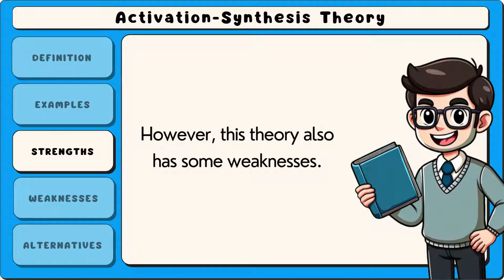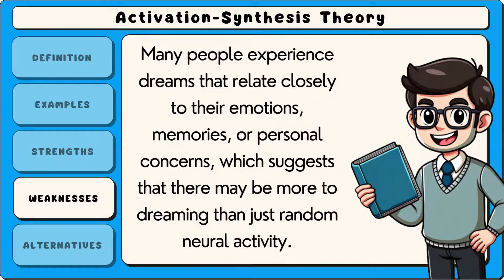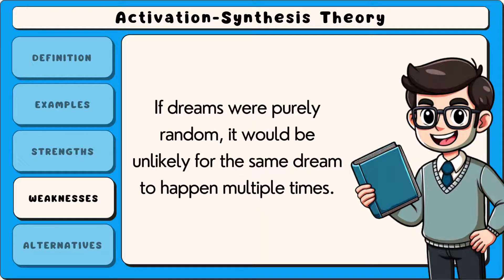However, this theory also has some weaknesses. One weakness of activation synthesis theory is that it does not fully explain why some dreams seem meaningful. Many people experience dreams that relate closely to their emotions, memories, or personal concerns, which suggests that there may be more to dreaming than just random neural activity. Another limitation is that the theory does not explain why people often have recurring dreams or themes that appear repeatedly over time. If dreams were purely random, it would be unlikely for the same dream to happen multiple times.